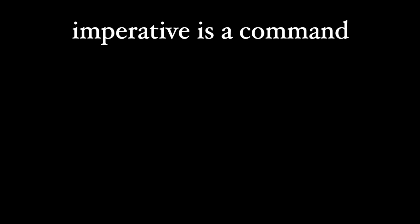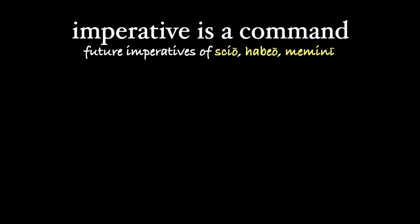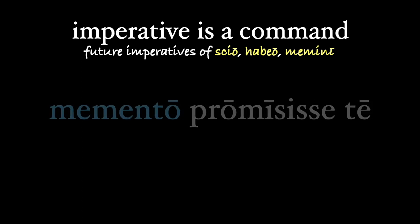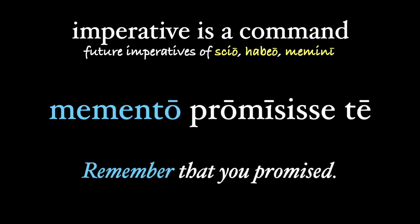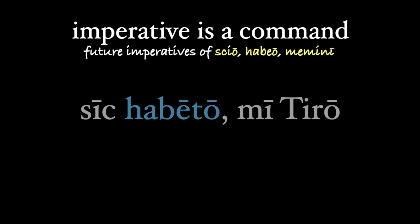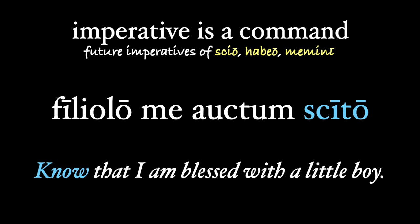You'll also see the future imperatives of 'scio,' 'habeo' when it means to consider, and 'memini,' in situations where we might expect the present imperative. So the phrase 'memento mori' — 'remember that you must die' — a common expression on the mortality of us all. Or from Plautus: 'memento pro me sisse te' — 'remember that you promised.' 'Sic habeto, mi Tiro,' from Cicero: 'so consider it, my Tiro.'